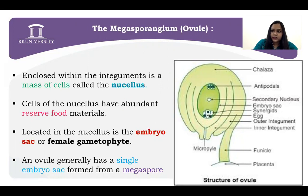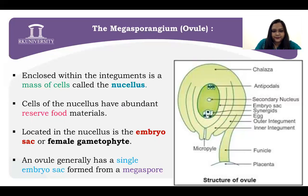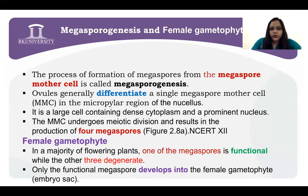So how is this embryo sac formed? Now we will see this. Different types of ovules have been studied — here is the example of anatropous. The embryo sac is formed from the megaspore. How will it be formed? It is formed from the megaspore mother cell — this process is called megasporogenesis.